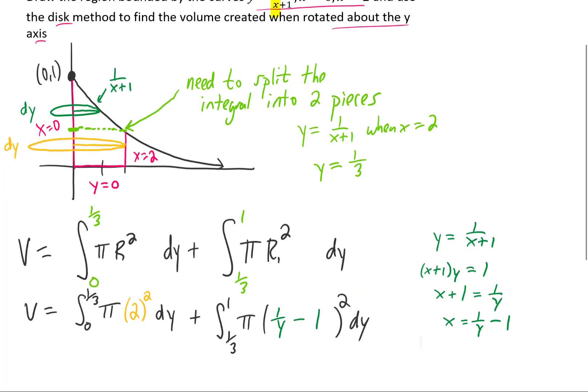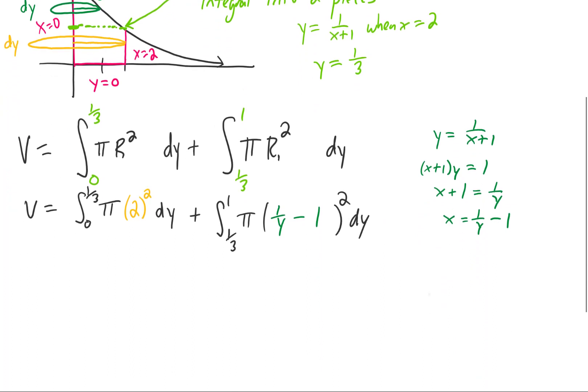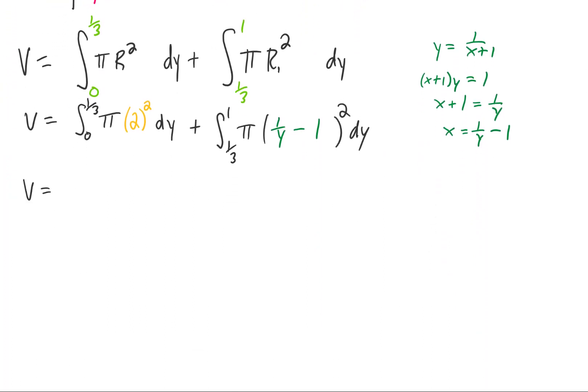So that's our setup, but the integration of this second piece of the integral is going to be fairly complicated. So let's run through it really fast. The first integral should be pretty simple. Two squared is four. Four pi is just a constant which we can take out of the integral.